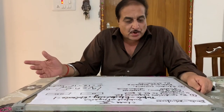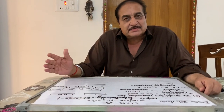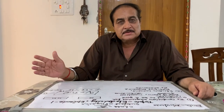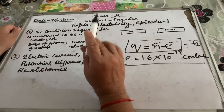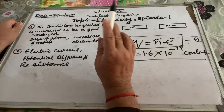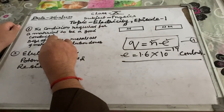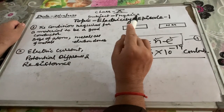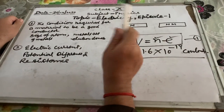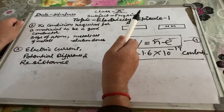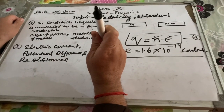Before going to the next topic, I would like to tell you what the basic condition is for a material to be a good conductor. The condition required for a material to be a good conductor is that it should have free electrons, or loosely bound electrons, because the loosely bound electrons present in the outermost orbits of an atom are known as free electrons.